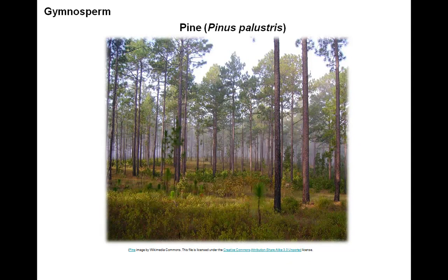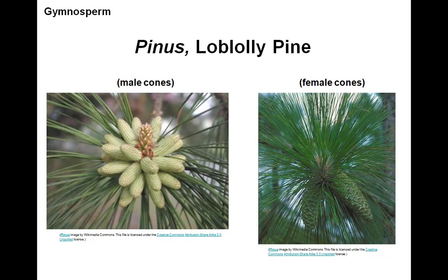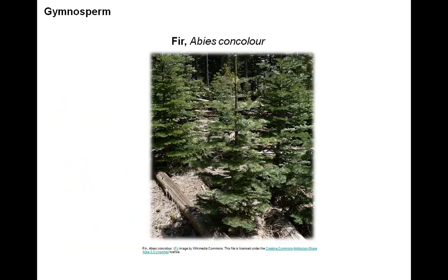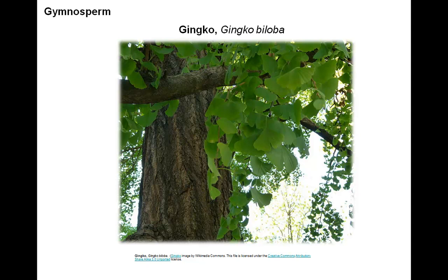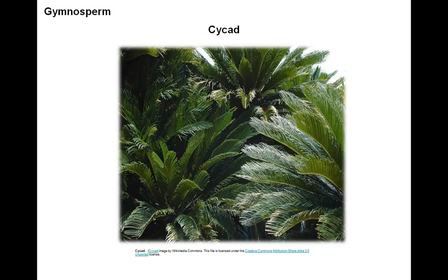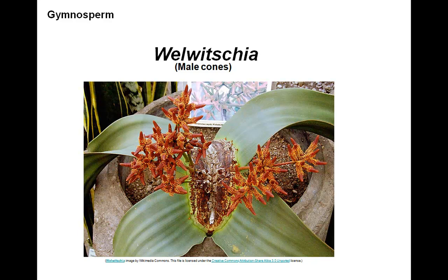Here are some examples of gymnosperms — pine trees. Here are some examples of male pine cones on the left; male pine cones produce the pollen, and the female pine cones house the egg, which after fertilization develops into the seed. Here are firs — think Christmas tree-like trees. These are examples of gymnosperms. Here is ginkgo and cycads. And here we see a very ancient gymnosperm, Welwitschia, with male cones producing the pollen.